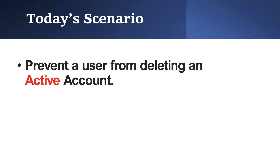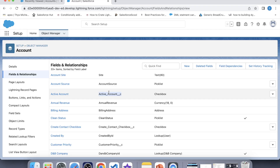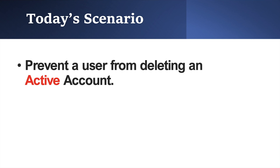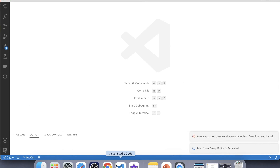In today's scenario we are going to prevent deletion of a record. We have a custom checkbox field on the Account object which indicates whether an account is active or not. If that checkbox field is checked, it means the account is active; if it is not checked, the account is not active. We will check whether an account is active using this checkbox field, and if an account is active and a user tries to delete it, it should not get deleted and an error should appear stating that you cannot delete an active account.